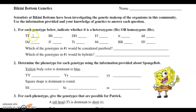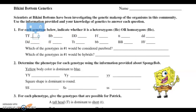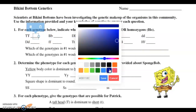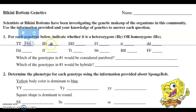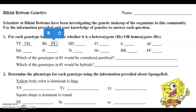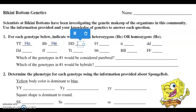So we have big T, big T — that would be homozygous dominant, so we'll put HO there. Big B, little B — that's a dominant allele and a recessive allele, they are different, so that's heterozygous. Big D, big D — homozygous, because they're the same. They're both big letters, so that would be homozygous dominant.